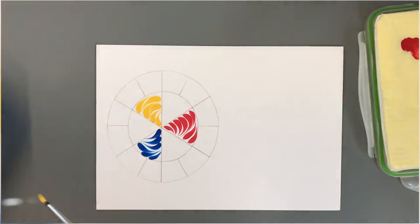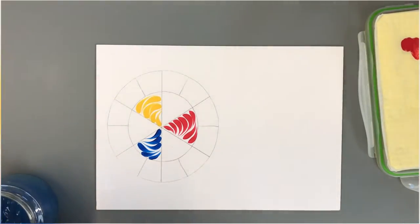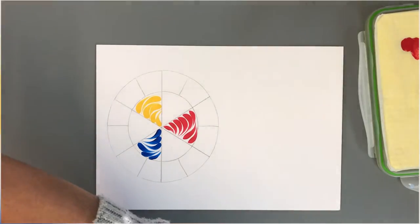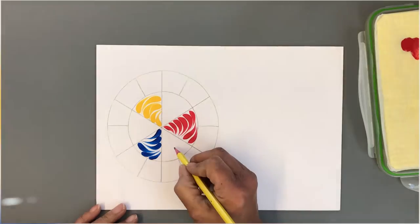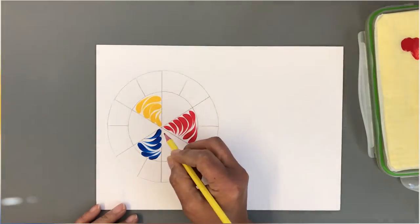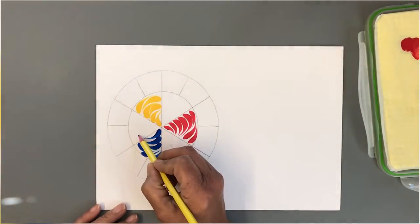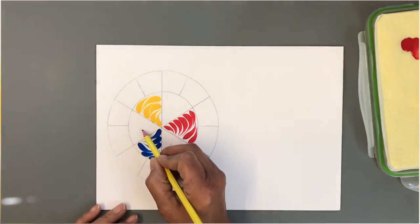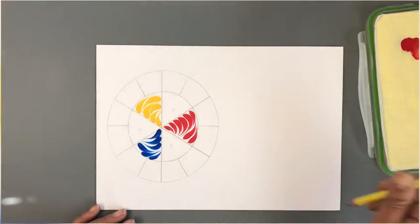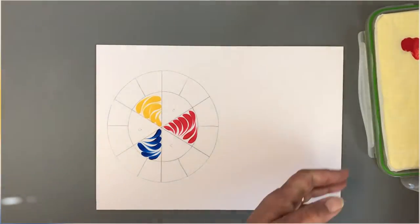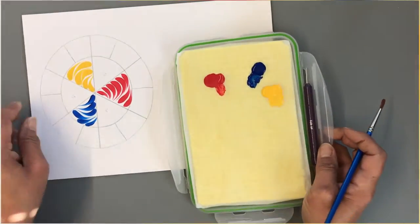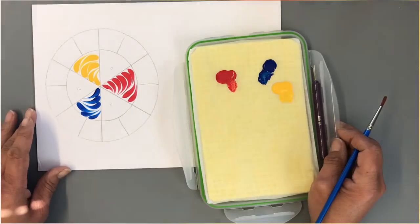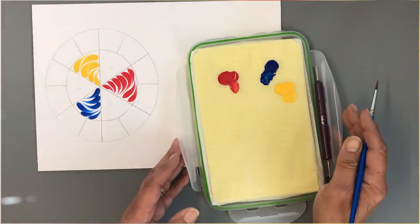Now that we have the three primary colors in, the next colors we're going to make, mixing these primary colors, is going to be purple, green and orange. And you're going to have equal parts of paint.